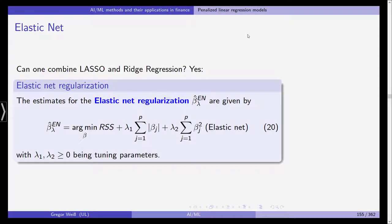Welcome back to our class in artificial intelligence and machine learning in finance. After having seen the lasso and the ridge regression, one can ask whether one can combine them — the two most well-known types of penalized linear regression models. And actually yes, you can combine them to overcome the shortcomings of both. This combination is called the elastic net regularization.